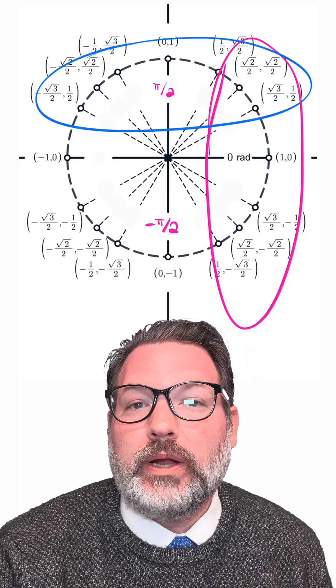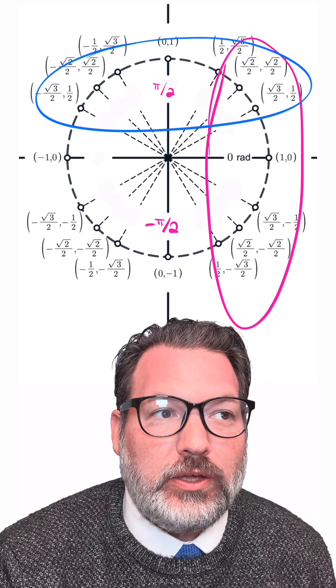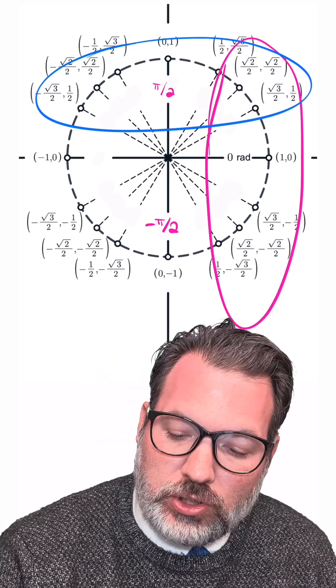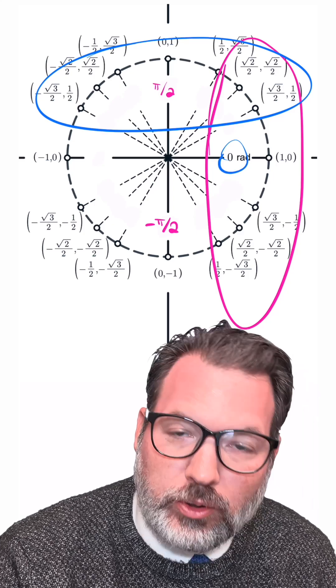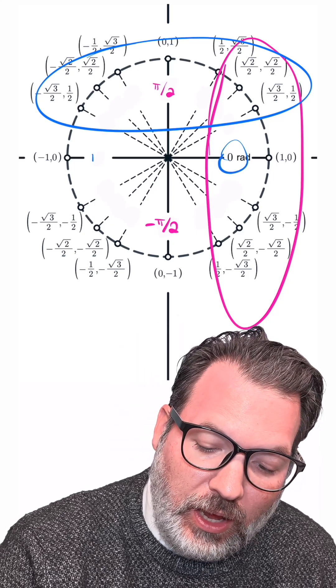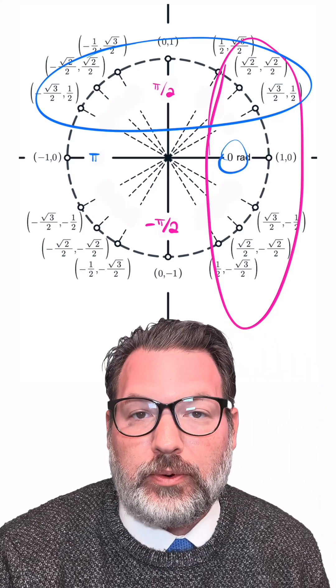And that area is quadrants 1 and 2. And that's why we only use the inverse cosine function to return angles between 0 degrees, or 0 radians, and 180 degrees, or pi radians.